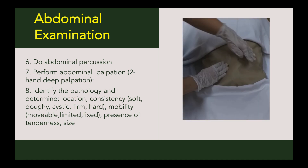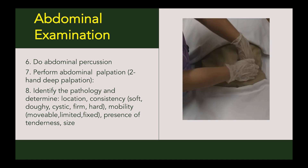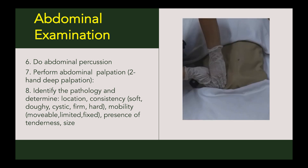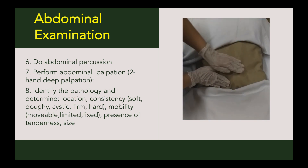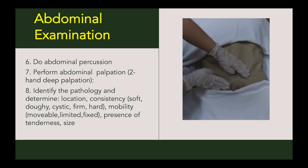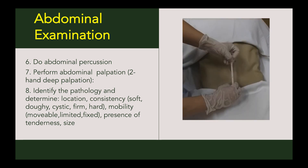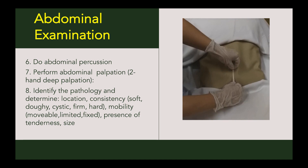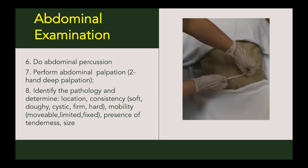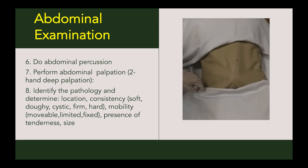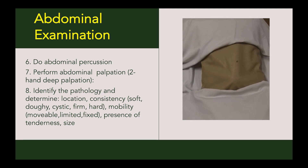Finally, we perform abdominal palpation using the two-hand deep palpation. Palpation is performed to assess tenderness, organ enlargement, and any masses. We identify the pathology and determine its size — using fingers to estimate or a measuring tape. We also note its location, consistency (whether it's soft, doughy, cystic, firm, or hard), its mobility (whether it's movable, limited, or fixed), and the presence of tenderness.